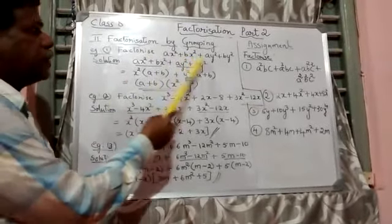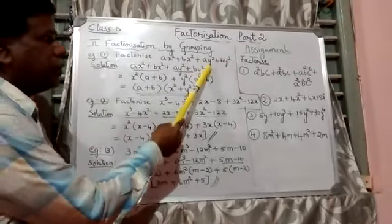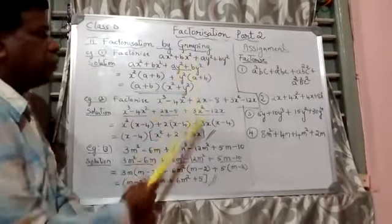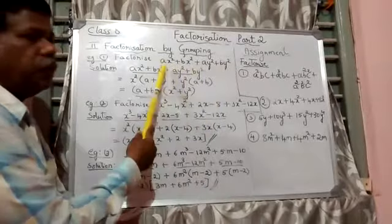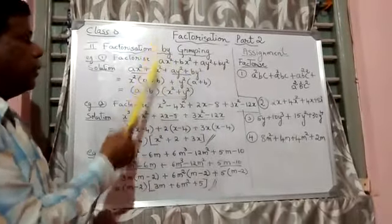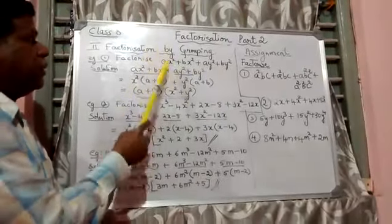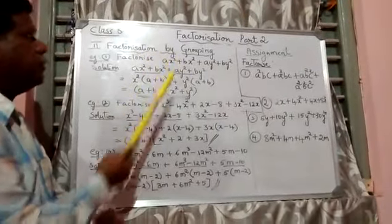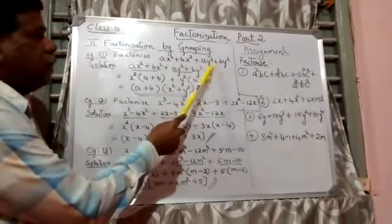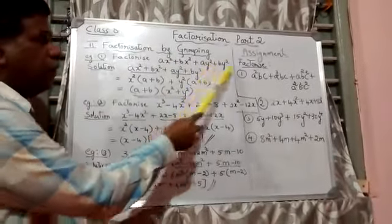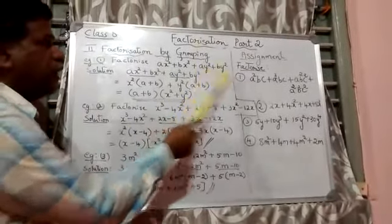Factorize ax² plus bx² plus ay² plus by². Nothing is common in all the four. But we can say that in the first two terms, x² is common. In the third term and the fourth term, y² is common.